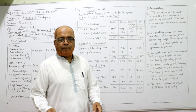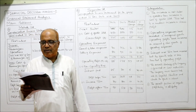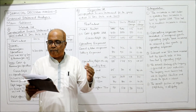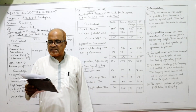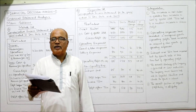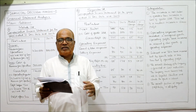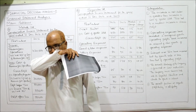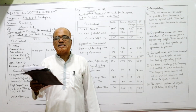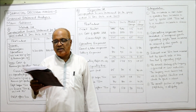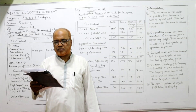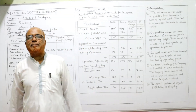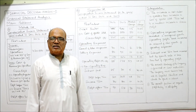Now problem nine: the income statement of Priyanka Limited is given for the year ending 31st December 2016 and 2017. Rearrange the figures in comparative form and study the profitability position of the concern. The information given includes: net sales, cost of goods sold, operating expenses (general and administrative expenses, selling expenses), non-operating expenses (interest paid), and income tax.